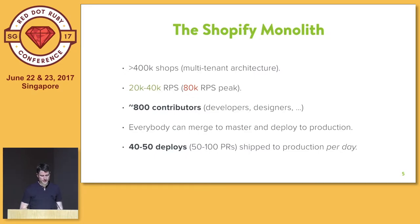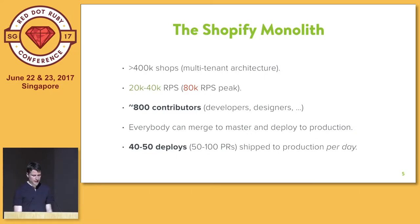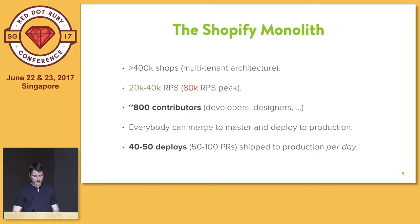There's a whole bunch of problems that come with having so many people trying to change the same thing at the same time, and so quickly. All 800 contributors have permission to merge changes to master, they all have permission to deploy to production, and with the rate of change we have right now, we deploy about 50 times per day — about 50 to 100 PRs a day. That kind of amount of change every day gives you a bunch of interesting problems you don't really run into with smaller applications.